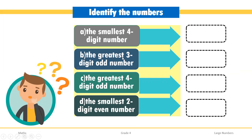Next, let's find the greatest three-digit odd number. When writing the greatest three-digit number, at all three places we write 9, giving us 999. Since it should be an odd number, we check the last digit — the last digit is 9. Whenever the last digit is 1, 3, 5, 7, or 9, the number is an odd number.